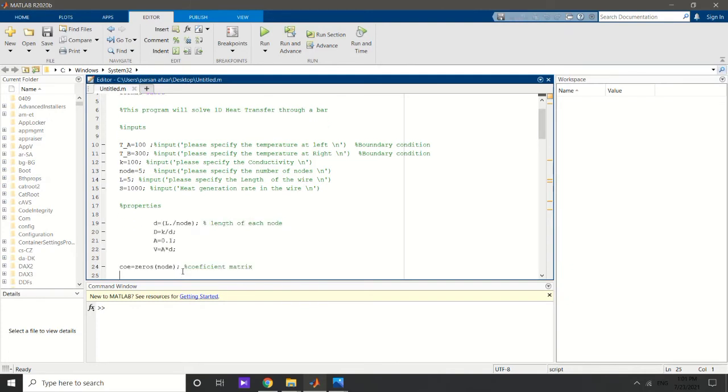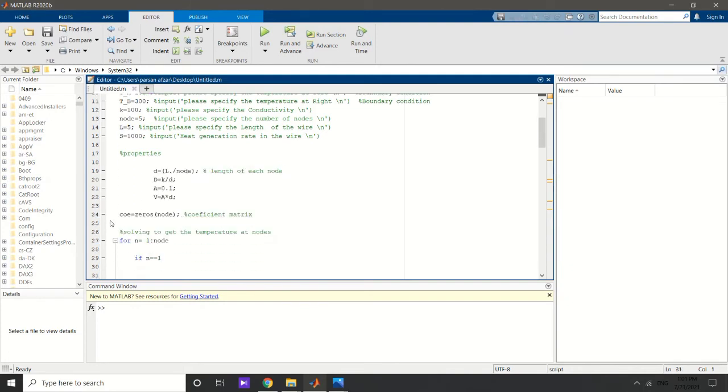Then I define some repetitive values that are likely to appear several times in my code. Now it's time to define the elements of the coefficient matrix. First, I define a zero matrix - a matrix whose elements are all equal to zero and it's a square matrix whose size is equal to the number of nodes.